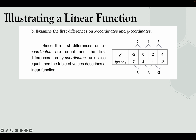In example B, x values are −2, 0, 2, 4 and y values are 7, 4, 1, −2. For x: 4−2=2, 2−0=2, 0−(−2)=2 — equal. For y: −2−1=−3, 1−4=−3, 4−7=−3 — also equal. Since both first differences are equal, the table of values describes a linear function.